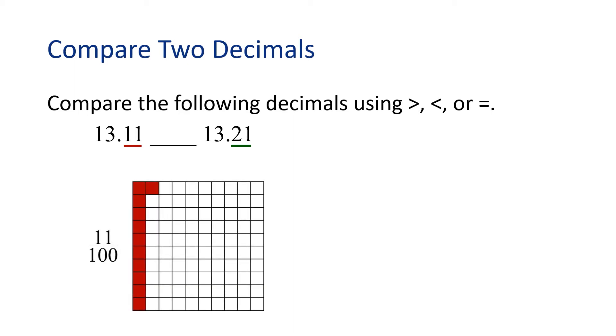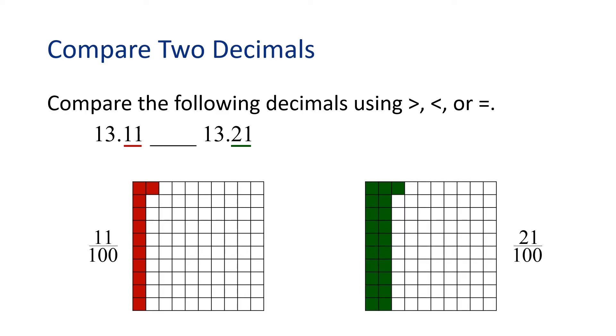To draw 11 hundredths, we will shade 11 out of 100 squares. So 21 hundredths is 21 squares shaded out of 100. Which decimal representation has more squares shaded? That's right, the one on the right. Comparing the shaded regions we can say that 11 hundredths is less than 21 hundredths. And we can fill in the blank with a less than symbol. Just in case you forget which direction the symbol faces, always have the open part towards the larger number.